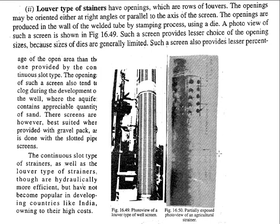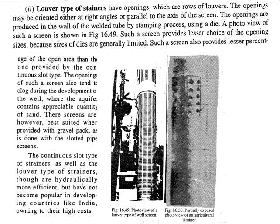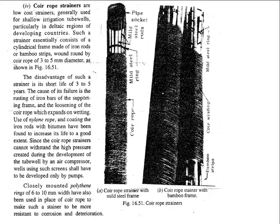The next type is the agricultural strainer. As you can see from the diagram, this type of strainer is mainly used for agricultural purposes and may also be provided at a shallow depth. It helps in extracting impurity-free water at a shallow depth and is widely used for agricultural applications.